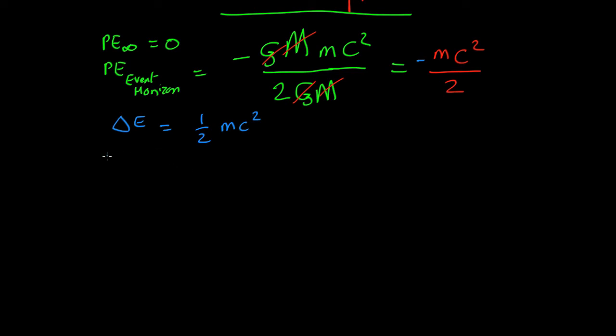So what that means is, you're releasing 50% of the rest mass energy. mc squared is the total energy, and 50% of that has been converted into potential energy by the time something hits the event horizon. So that in principle is how much you could release.